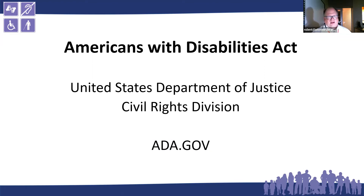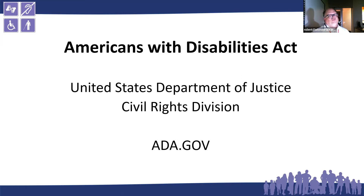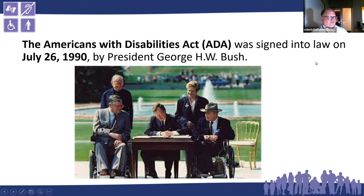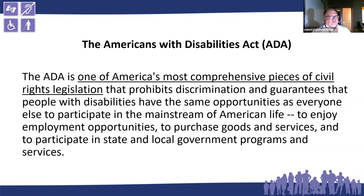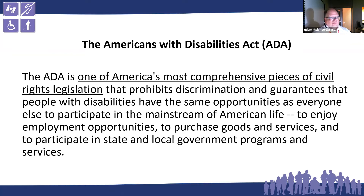The Americans with Disabilities Act falls under the United States Department of Justice, Civil Rights Division. The ADA was signed into law July 26, 1990, by President George H.W. Bush, right outside of the White House. The ADA is one of America's most comprehensive pieces of civil rights legislation — it prohibits discrimination and guarantees people with disabilities the same opportunities as everyone else to participate in mainstream American life, enjoy employment opportunities, purchase goods and services, and participate in state and local government programs and services.